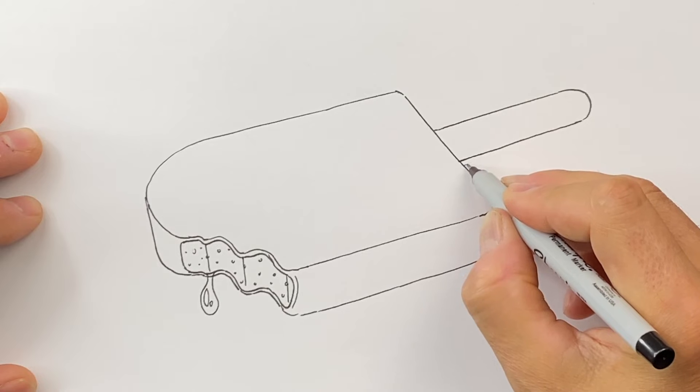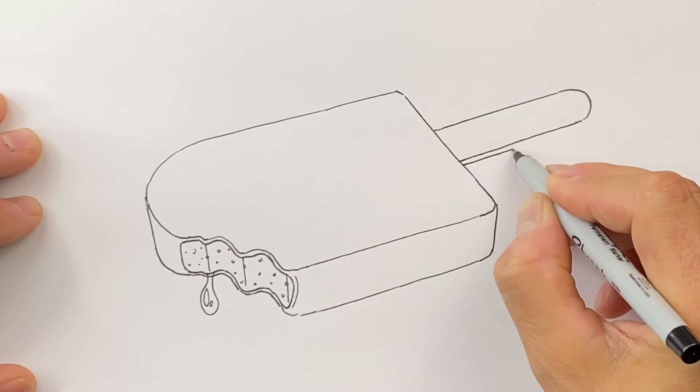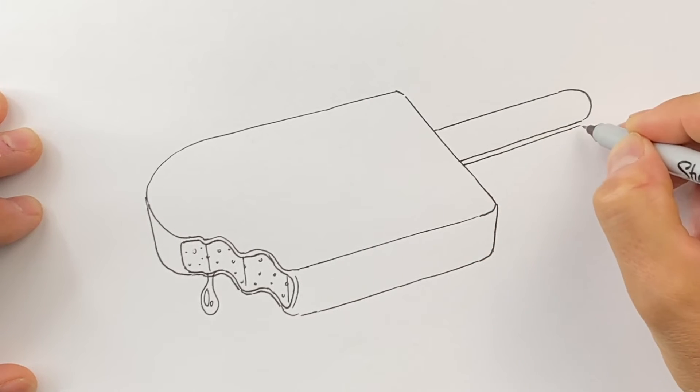And then we'll draw a thickness because this wood stick has a little bit of a thickness to it, and we'll come up like that.